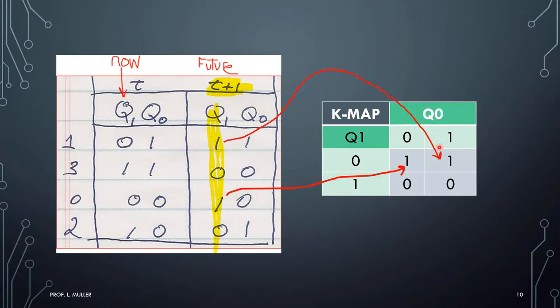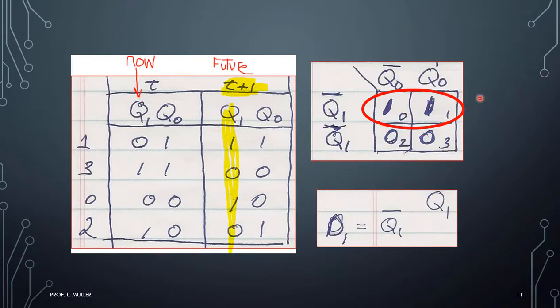So I look at this thing and I can now simplify this K-map by saying, well, I want this to be a 1, Q0, when Q1 is a 1, excuse me, 0, and that's it. That's all I need. So I circle them both. Q1 is a 0, so that'd be my D1.